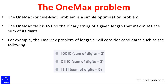Here is a description of the one max problem. One max problem is a simple optimization problem in which we need to find the binary string of a given length that maximizes the sum of its digits. Please see how we calculate the objective function of the one max problem with a size of 5 in this example.